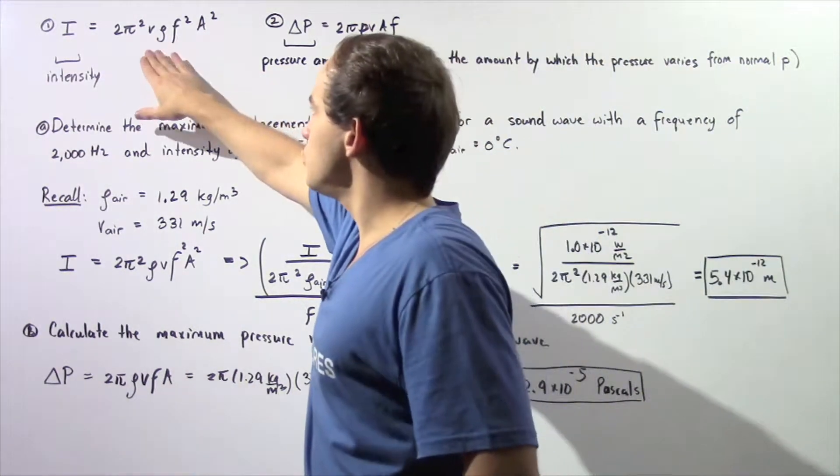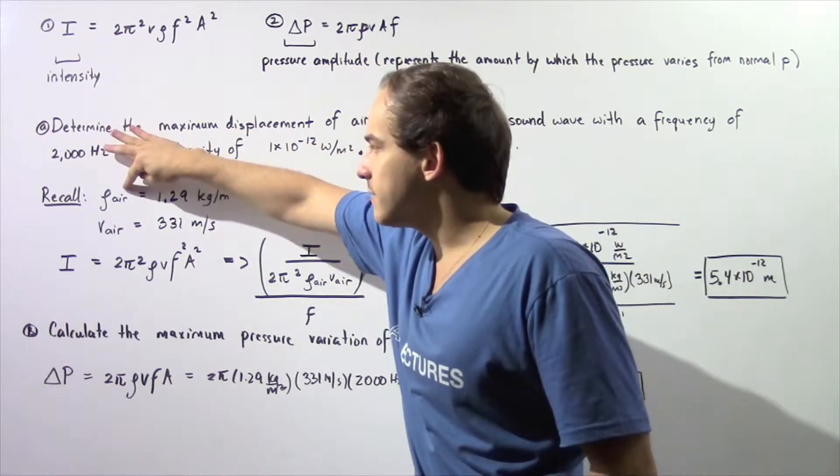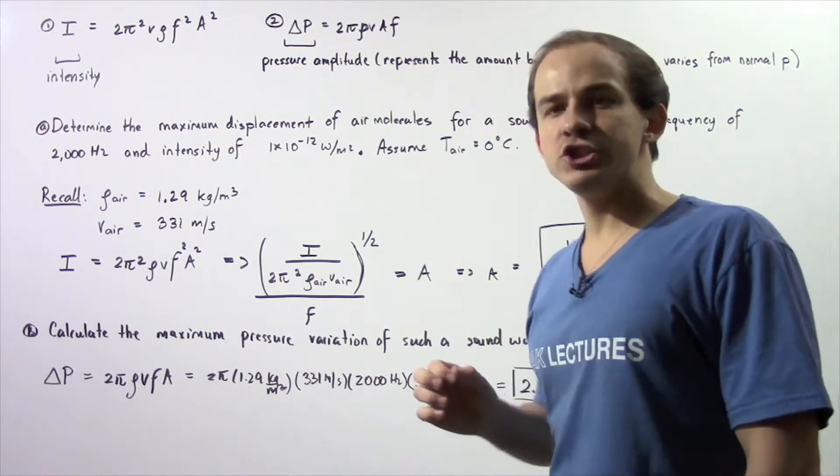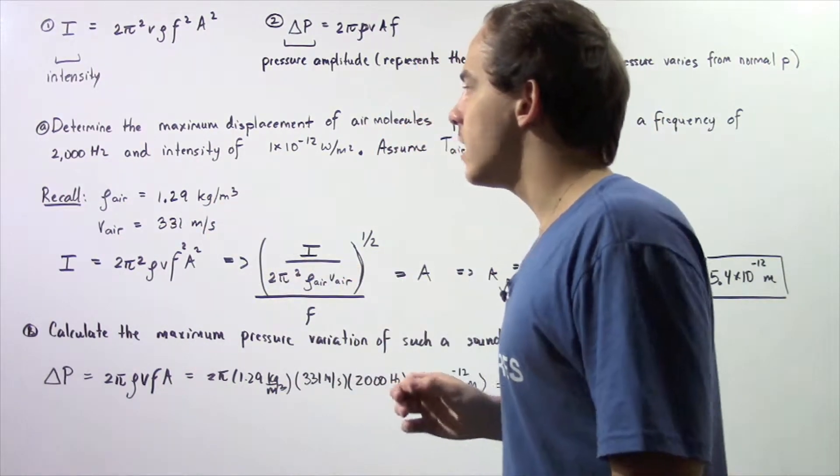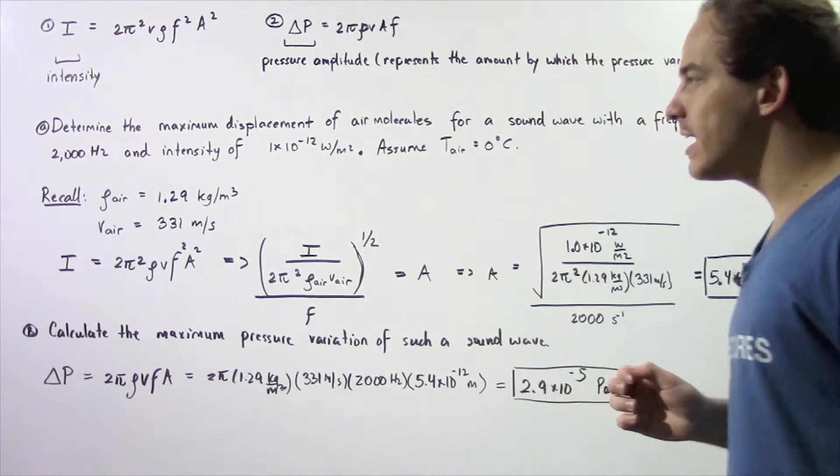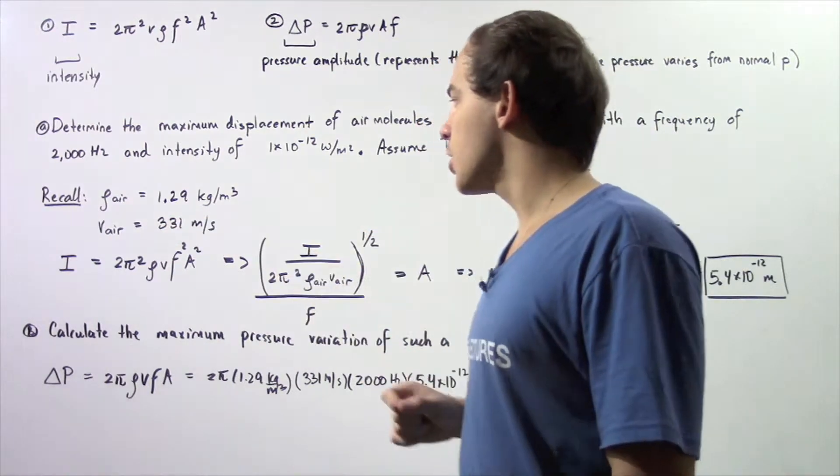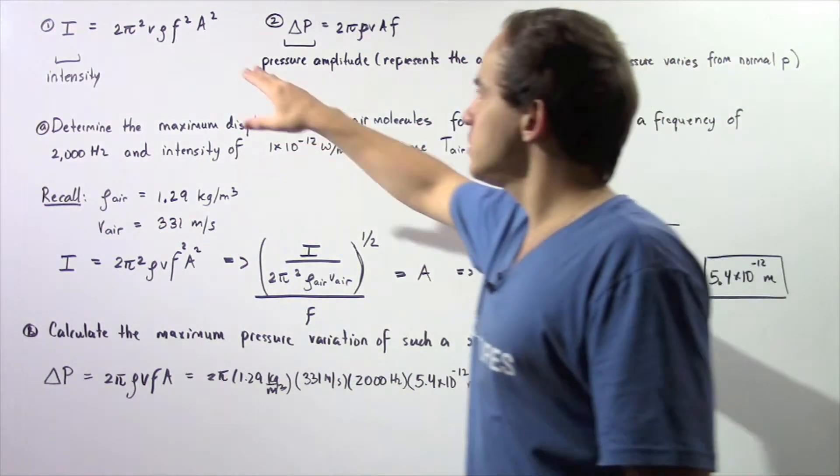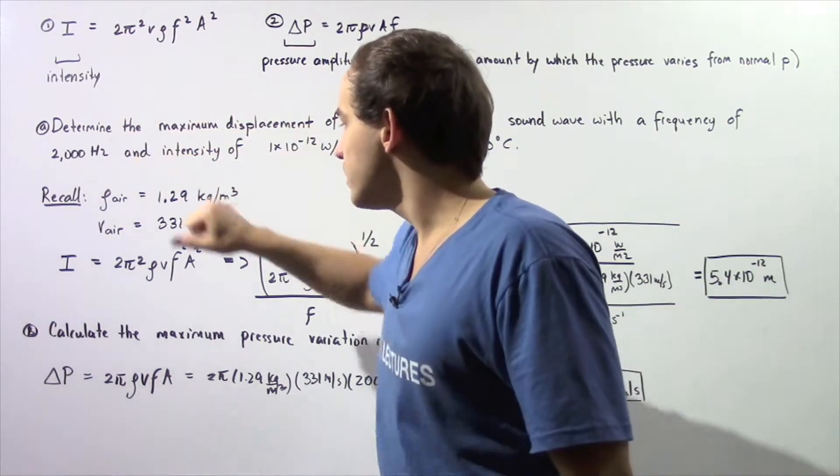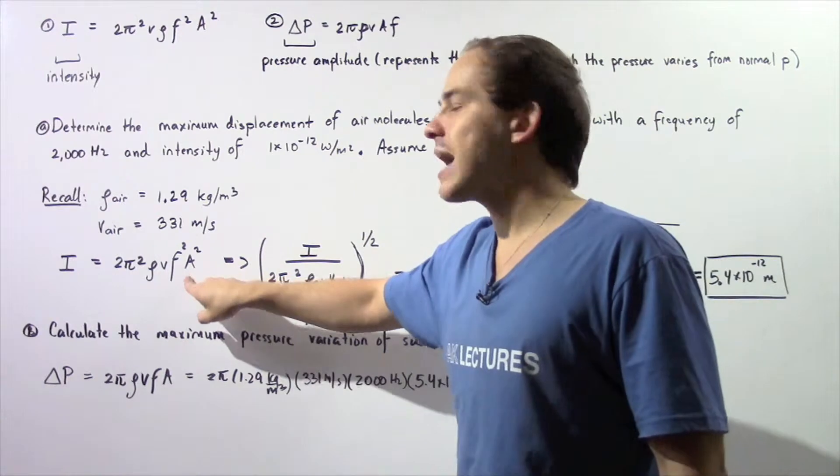We essentially want to use this equation and recall that the density of air is 1.29 kg/m³ and the velocity of a sound wave in air that has a temperature of 0°C is 331 m/s. We want to solve for our maximum displacement, which is our amplitude.